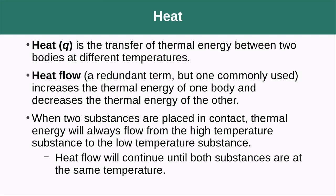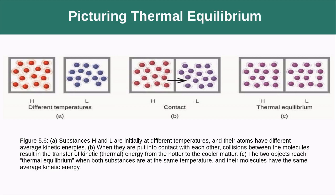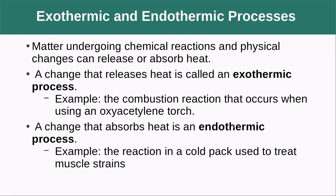Heat is the transfer of thermal energy between two bodies at different temperatures. Colloquially we think of heat as something inside an object, but it's not really a thing in itself — thermal energy is the thing, and heat is the transfer of it from one object to another. When a hot body and a cold body are brought together, their molecules interact through a barrier and eventually reach thermal equilibrium, where both sides are at the same temperature and molecules move at relatively the same speed.